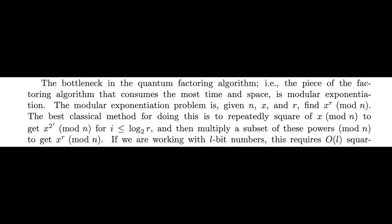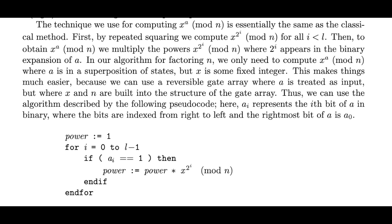Veritasium described the quantum computer doing it in this naive version in his video, but that is not the way it is computed on an actual quantum computer. Peter Shor didn't need to figure out how to do it. As he says in his paper, the technique he uses for computing x to z mod n is essentially the same as the classical method. By repeated squaring, we compute x to the 2 to the i mod n, then to obtain the result, multiply the numbers we just computed by the binary expansion of the exponent.